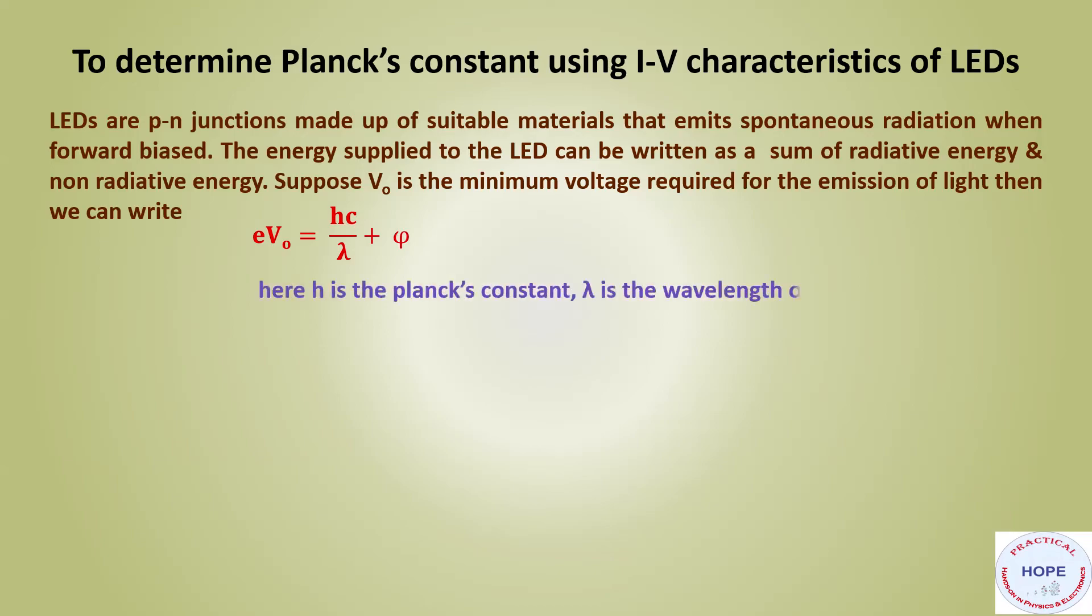Here, h is the Planck's constant, lambda is the wavelength of light emitted, e is electronic charge, C is the speed of light, and phi represents the non-radiative losses.